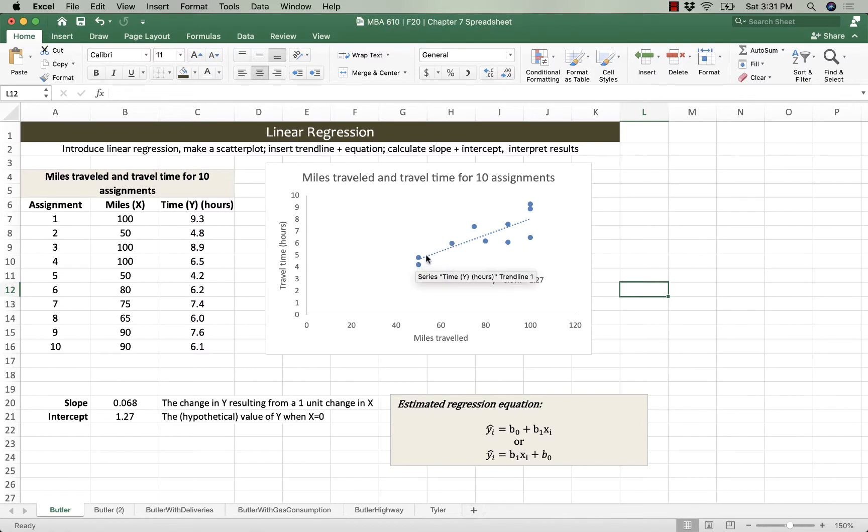If we were to take this back to maybe 40 miles, we would expect it to take around 4 hours. And we can carry it all the way back to 20 miles or 10 miles. But if we get back here, we're going to run into this y-axis where we travel 0 miles. What is the value of travel time when miles are 0? Well, intellectually, we can imagine that it's probably 0, because if you don't go anywhere, you have 0 travel time.